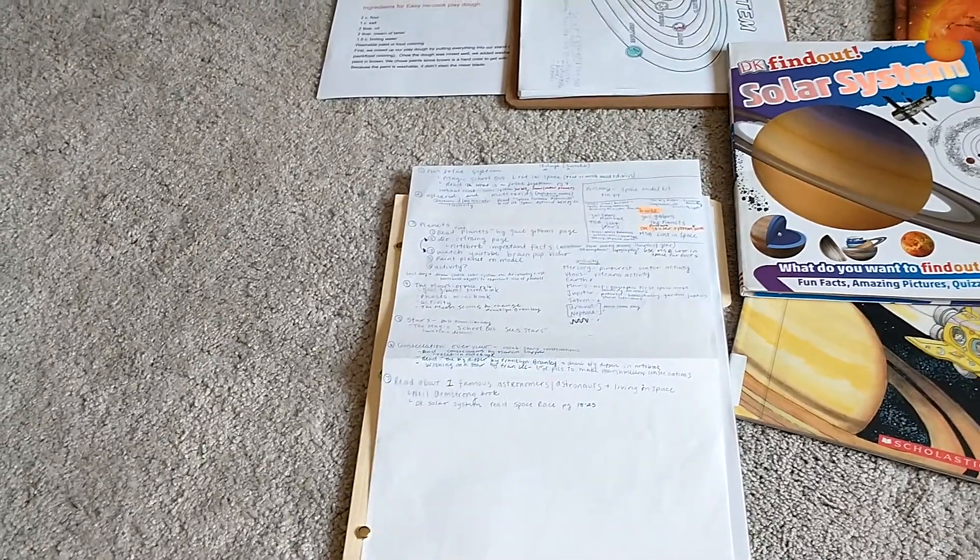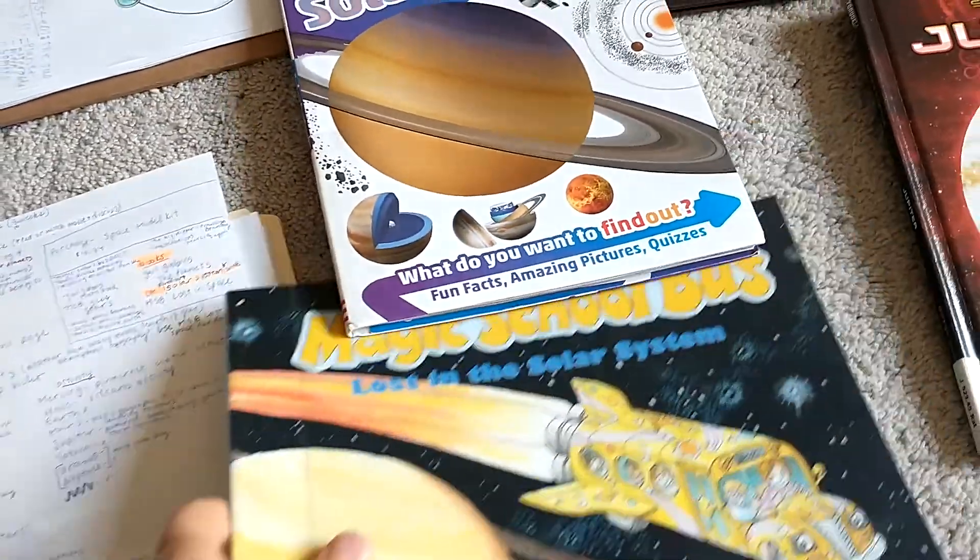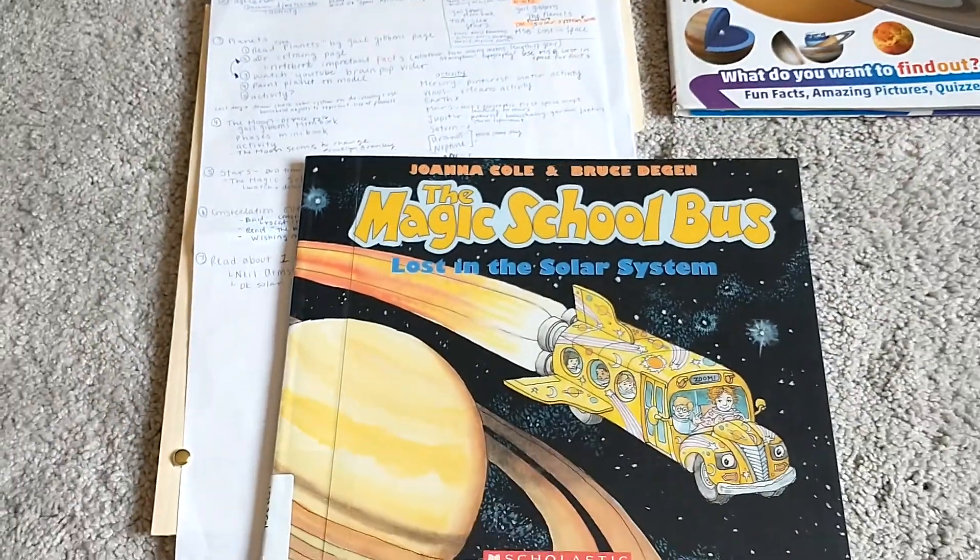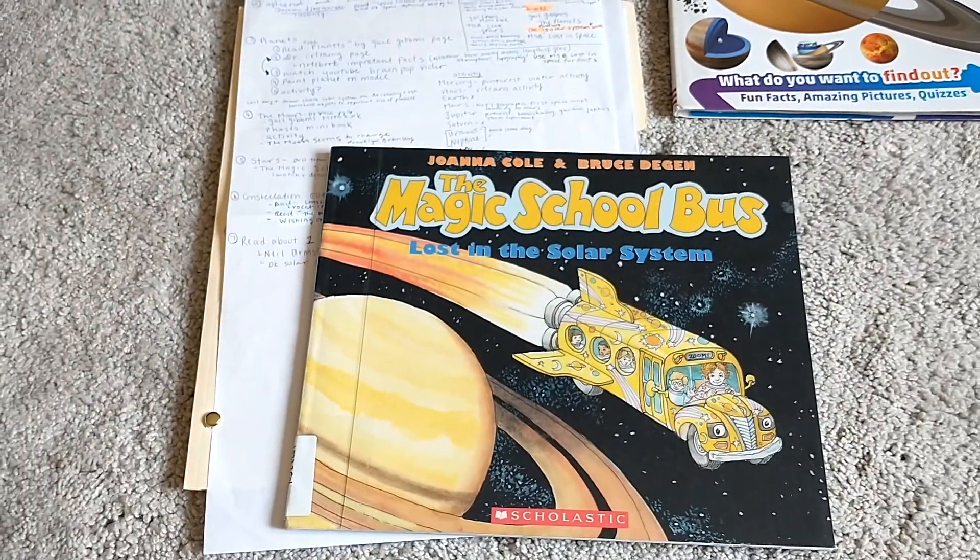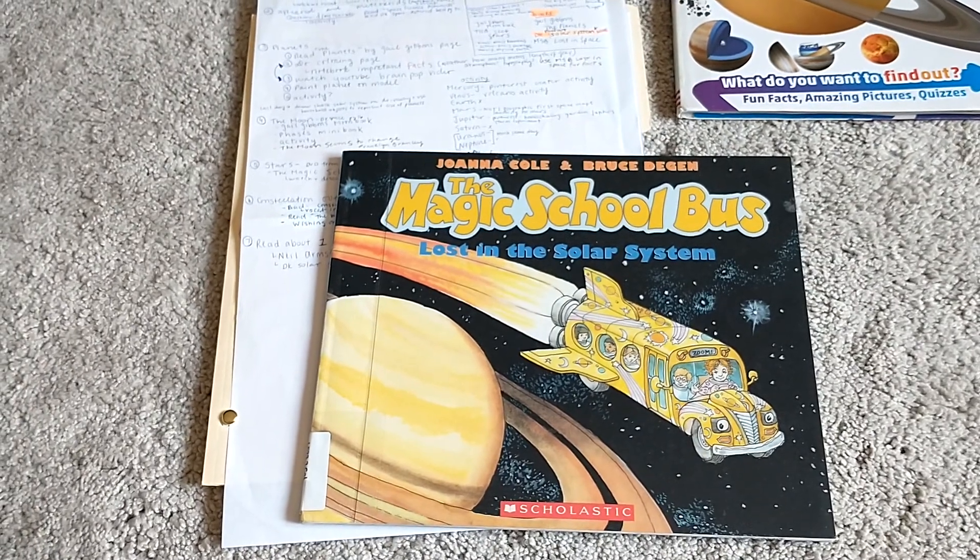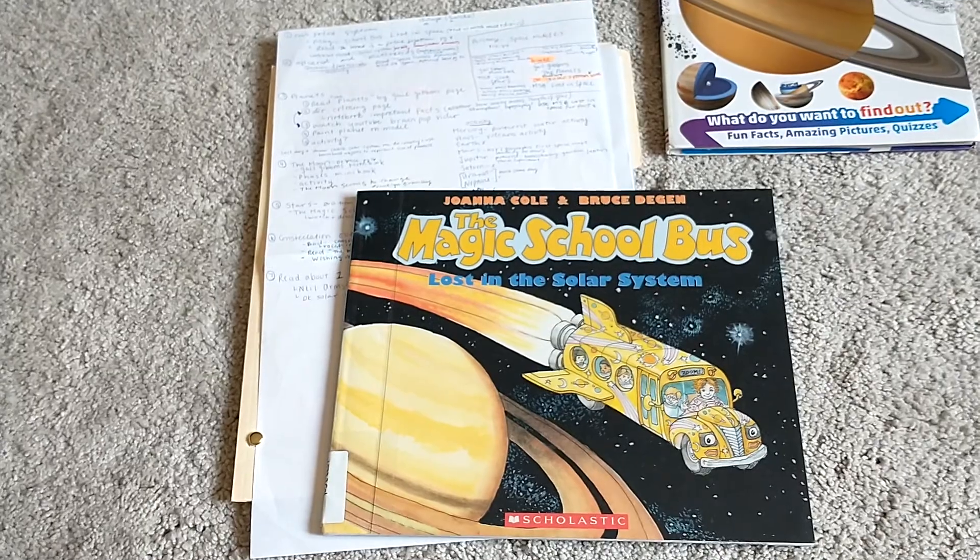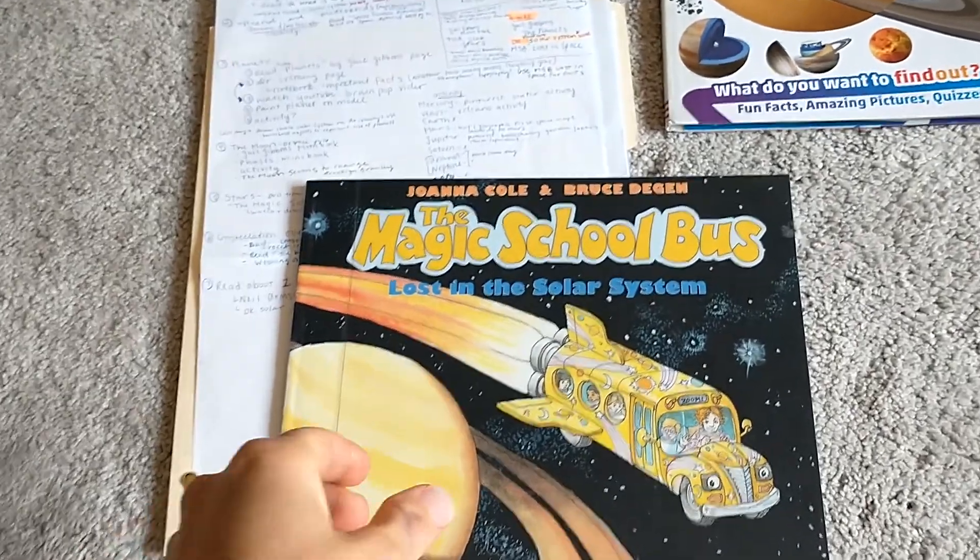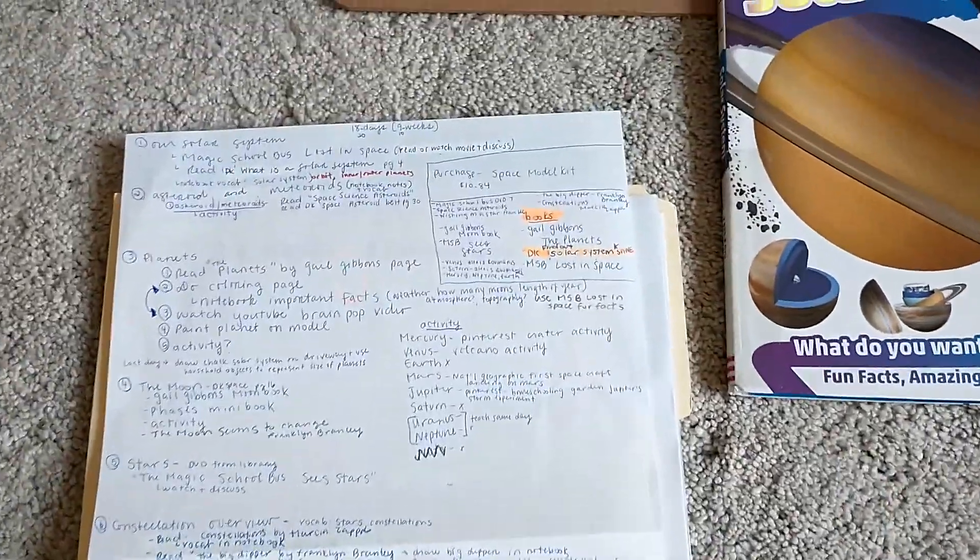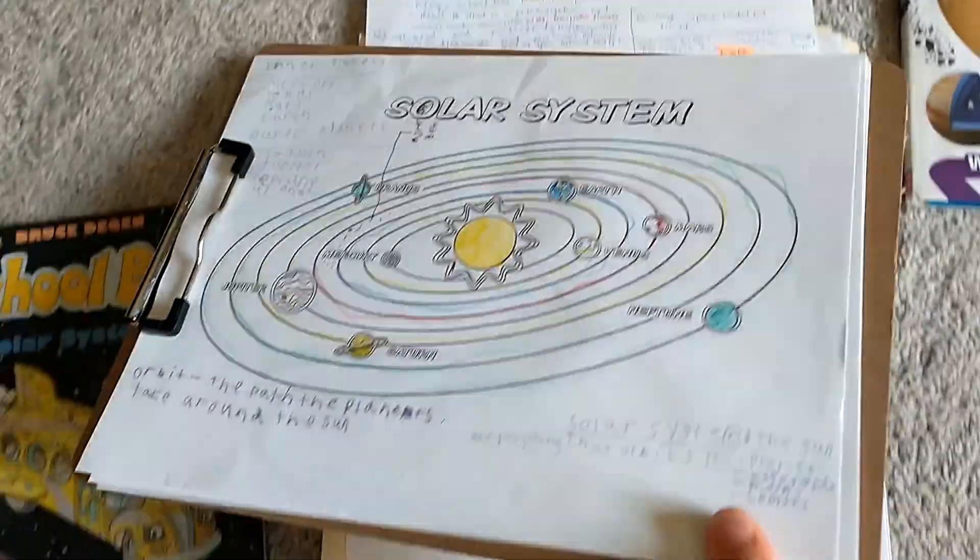So to start off the solar system unit we read The Magic School Bus Lost in the Solar System and then you can go on YouTube and you can watch the video of the book. And then we did our notebooking page.